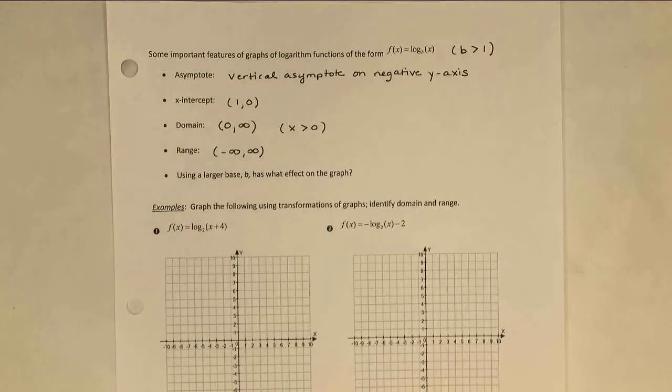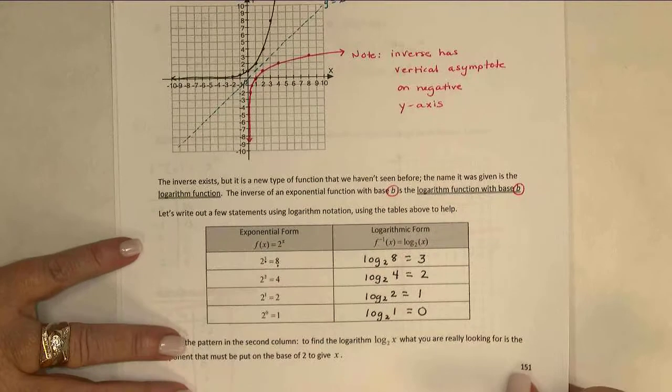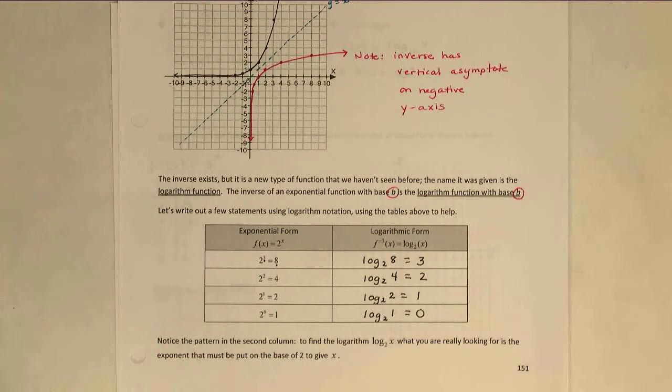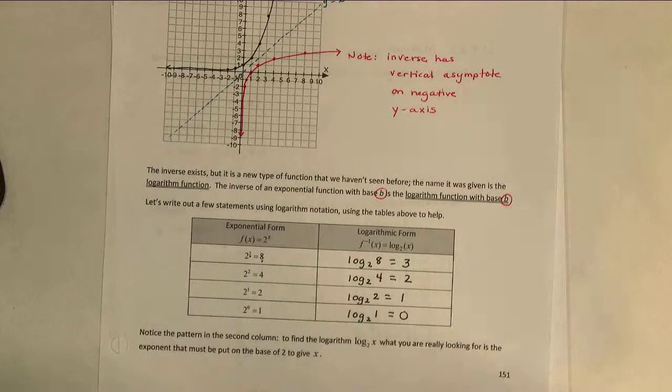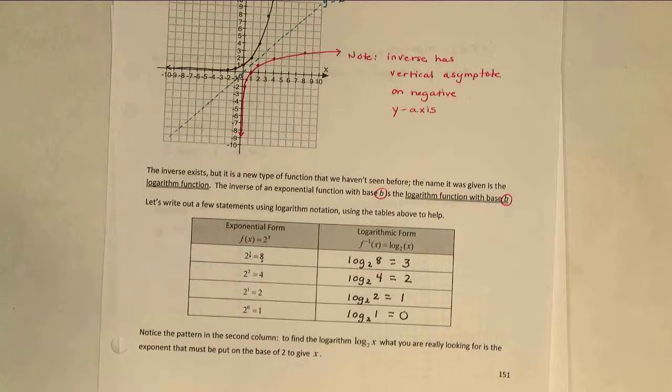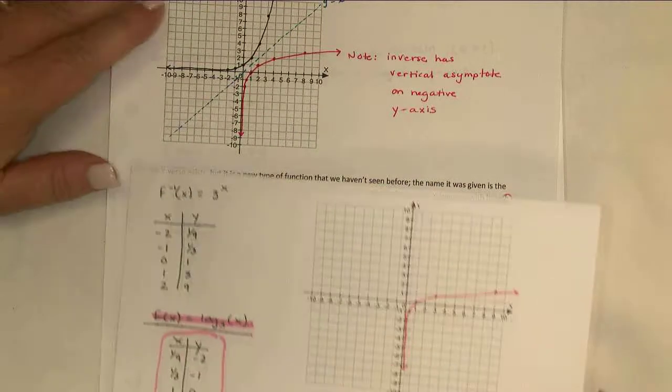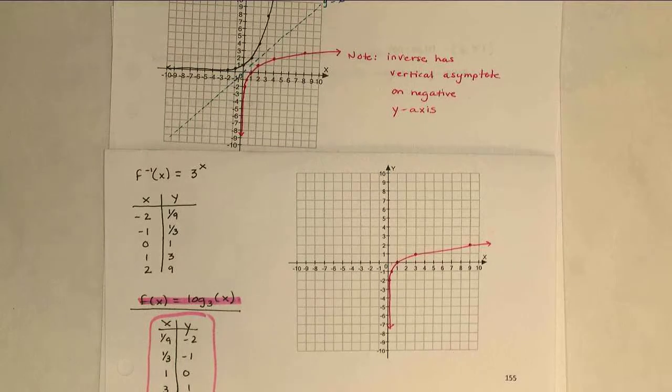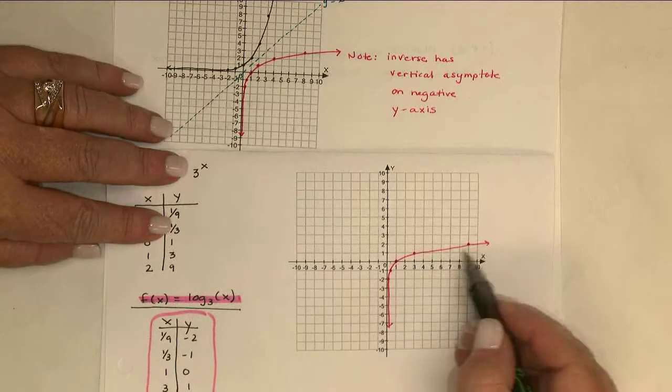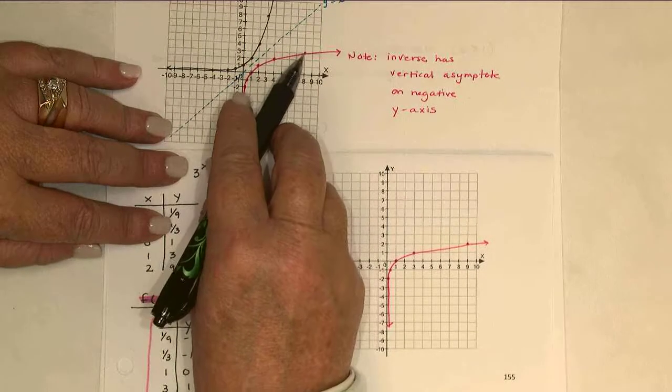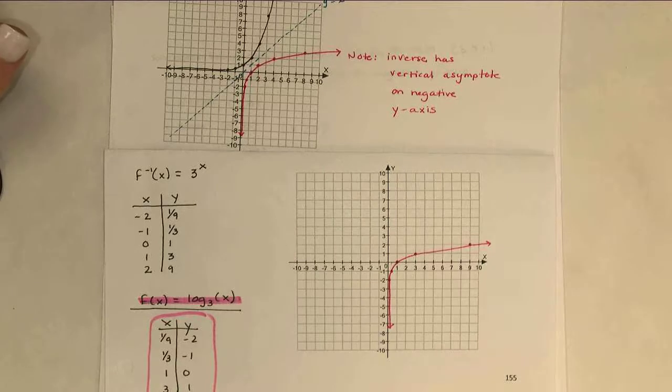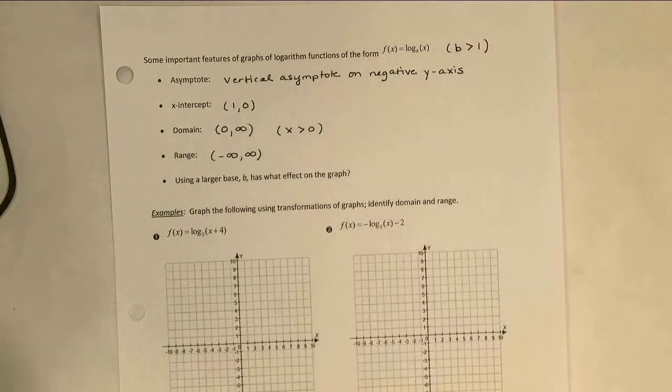Using a larger base had what effect on the graph? Again, we saw it rather subtly, but we had looked at that 2 to the x graph that we did at the beginning of 2.6, and then we looked at the 3 to the x graph that we did just a few minutes ago. See if I can get these on the same page here for you. Here's the 3 to the x. And we said the graphs were extremely similar, but the 3 to the x went up just a little bit more slowly. Notice here we're at 9, 2. Here we're actually at 8, 3. So the bigger the base, the more slowly the graph goes up in its end behavior on the right.